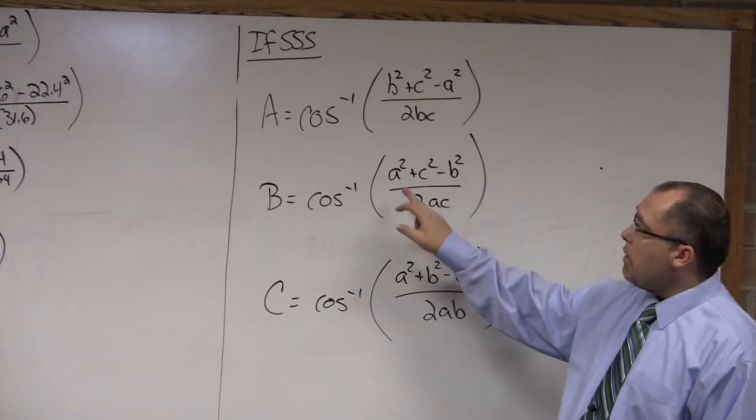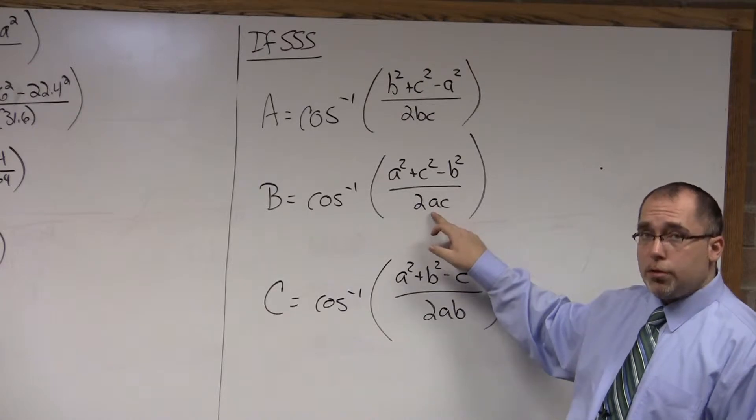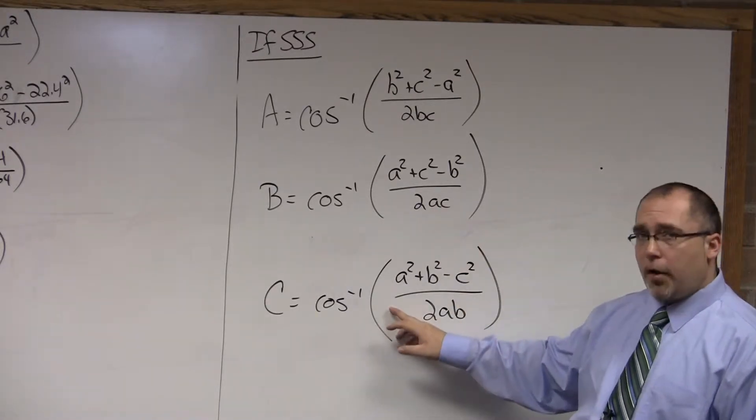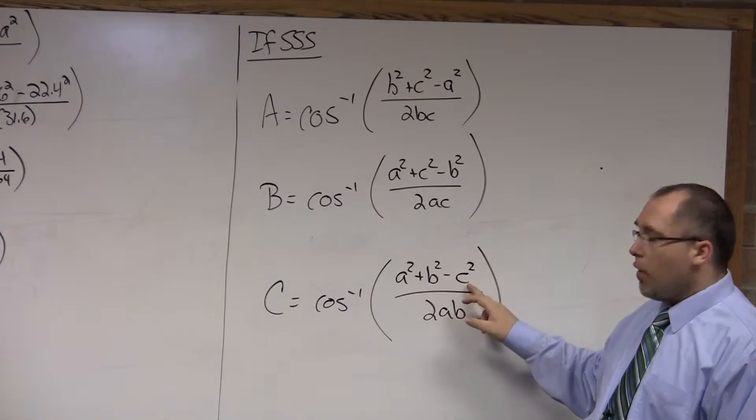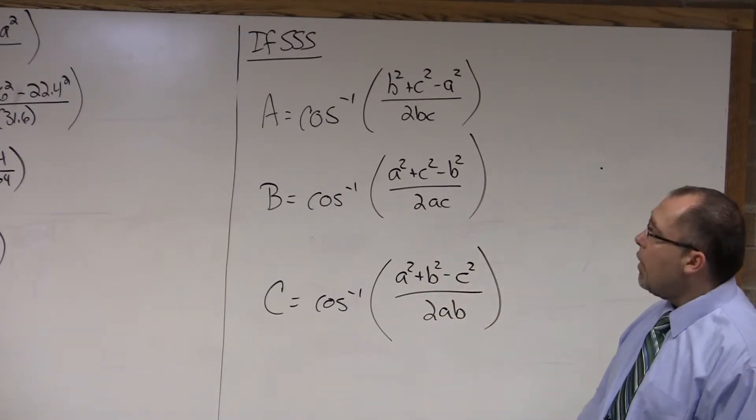If you're looking for angle B, our numerator is a squared plus c squared minus b squared over 2ac is our denominator. And if you're looking for angle C, it's a squared plus b squared minus c squared is our numerator, all over 2ab is our denominator.